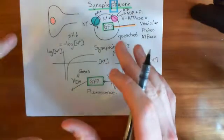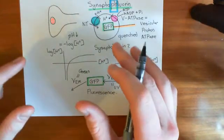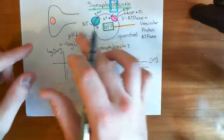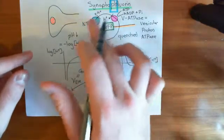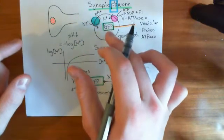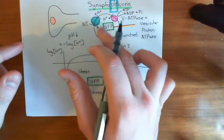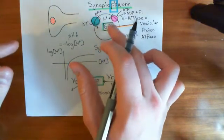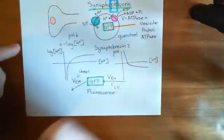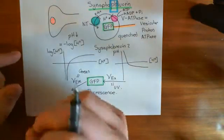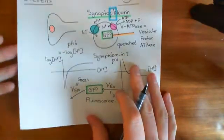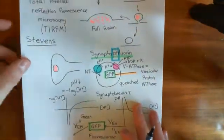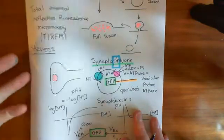We're going to use this to image the fusion event. When the vesicle fuses with the membrane, the protons will be allowed to leave the vesicle. Therefore, you'll get a lower proton concentration, and that will lead to an increase in the fluorescence of the synaptofluorin proteins. You'll be able to see the fusion event by an increase in fluorescence, which will indicate the reduction in proton concentration. To see this at such a tiny scale, you have to use total internal reflection fluorescence microscopy.